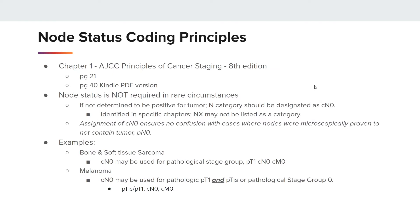Node Status Coding Principles. Chapter 1, AJCC Principles of Cancer Staging, 8th edition, page 21 — or page 40 in the Kindle version. Node status is not required in rare circumstances. If not determined to be positive for tumor, the N category should be designated as CN0. This is identified in specific chapters, and X may be listed as a category as well. The assignment of CN0 ensures there is no confusion with cases where nodes were microscopically proven to not contain tumor, or PN0. Some examples would be bone and soft tissue sarcoma where CN0 may be used for pathologic stage group PT1, CN0, CM0, and also for melanoma.